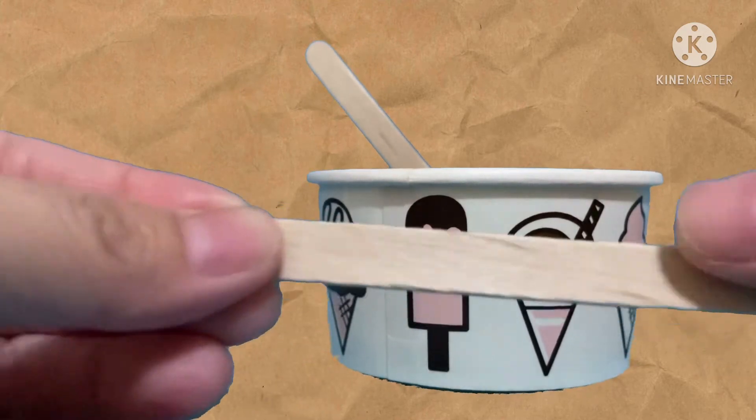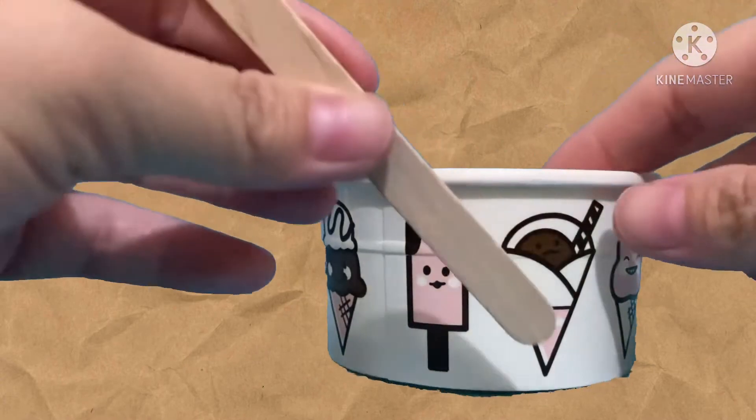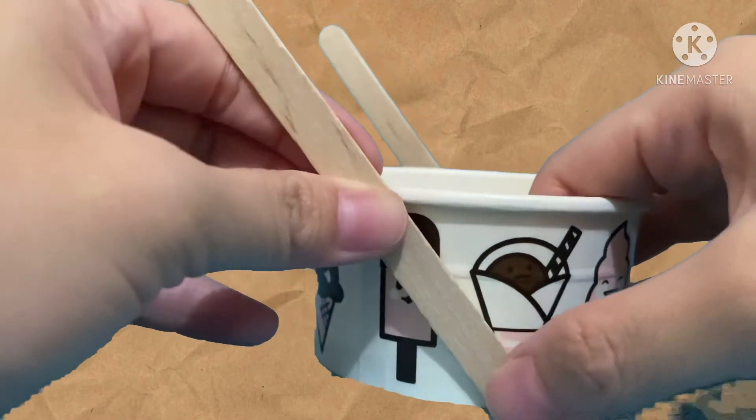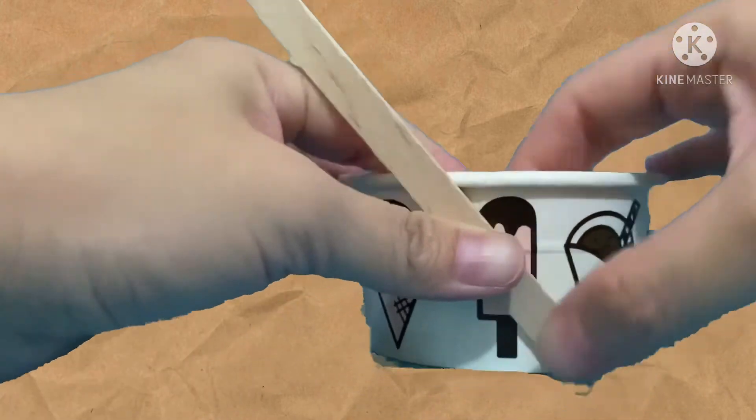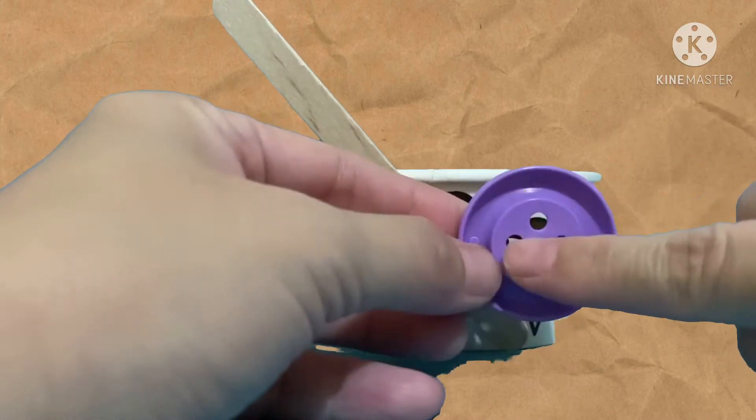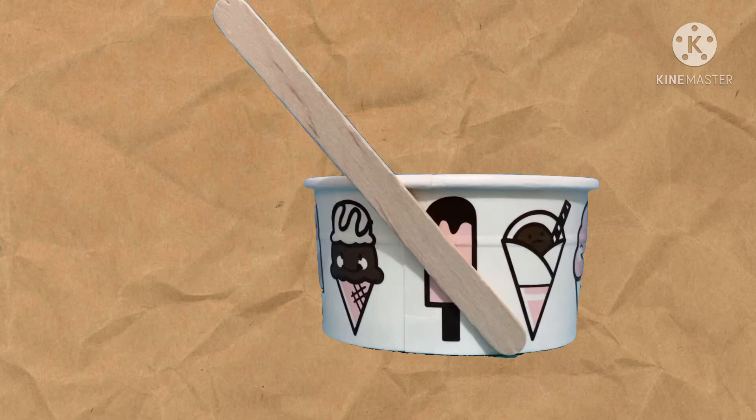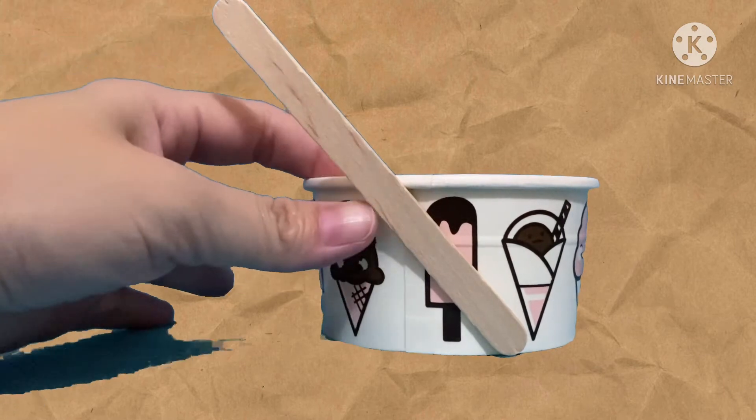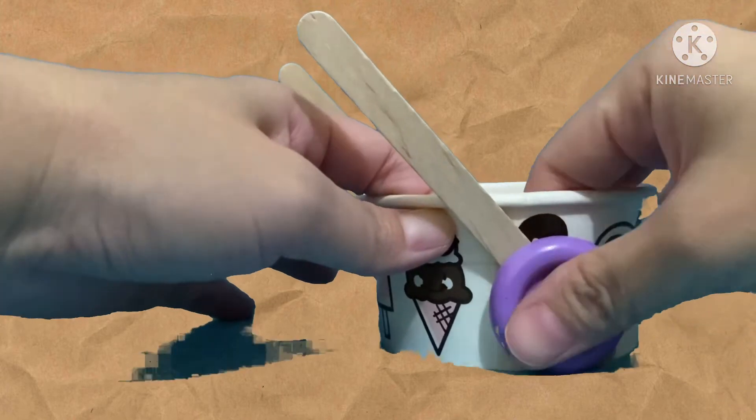Let's take a straw. Put the glue on it and place it on the other side.